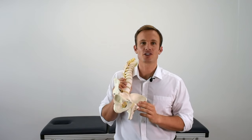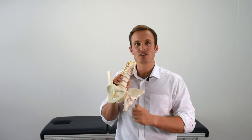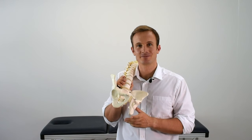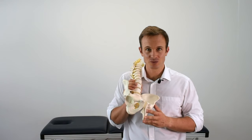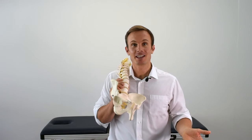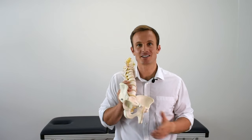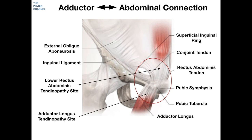The adductor longus originates from the pubis and then inserts onto the medial third of the thigh. The abdominals and adductor longus form part of the myofascial front functional line as reported by Thomas Myers. You can see in the image here a clear representation of the adductor abdominal connection — or to be precise, the adductor longus and rectus abdominis connection.